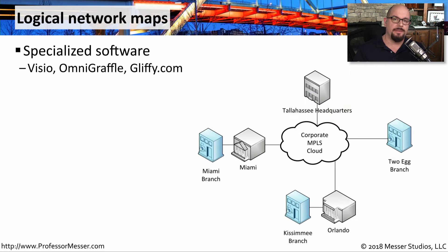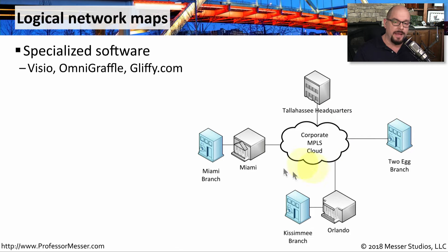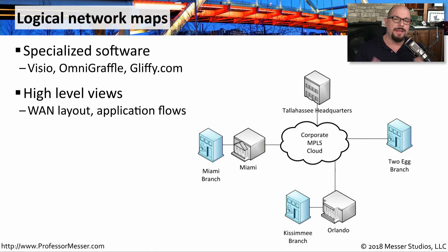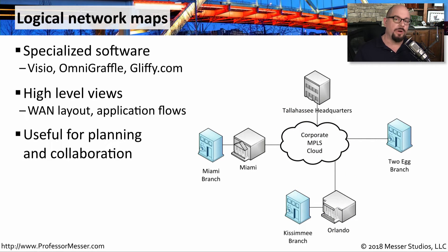We covered logical and physical network diagrams in section 1.5 under network topologies, but let's quickly review. When you're creating logical network maps, you're building out a broad perspective of the way the network might be configured. You can usually create this documentation with software such as Visio, OmniGraffle, or third-party websites. This is a high-level view — it's not showing specific components or exactly where wires may be going, but you can understand exactly what sites are connected and how they connect to each other. This is helpful if you're working with a third party that needs a general understanding of how the network is designed.